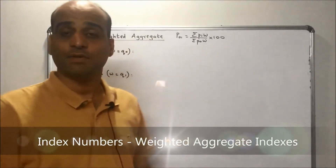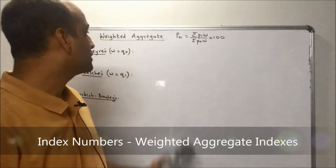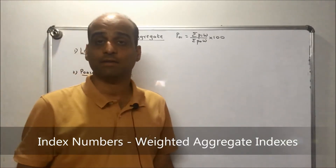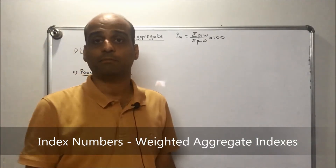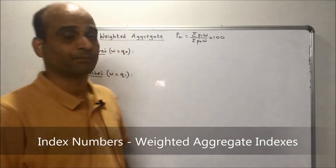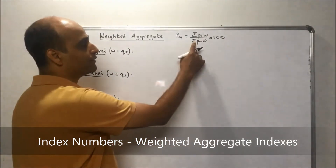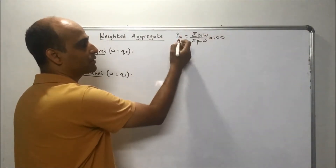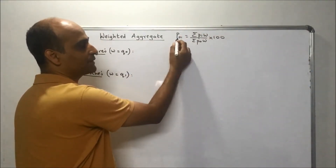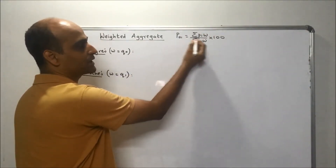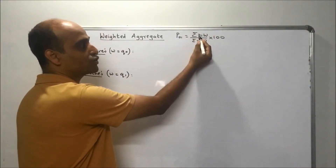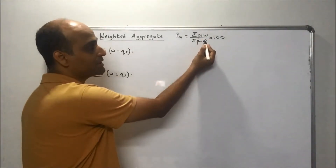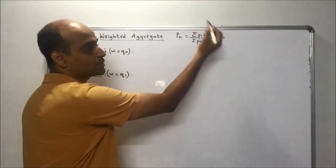Let's proceed with the weighted aggregate appendices in a bit more detail. You have to remember the general form: price index P01 is given by summation p1·w upon summation p0·w, multiplied by 100.